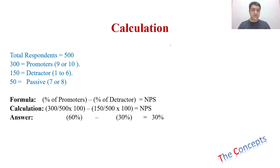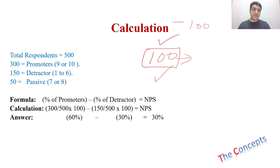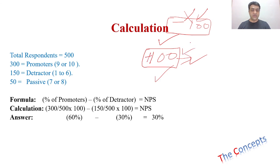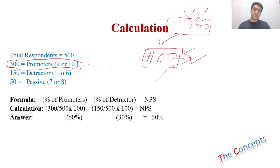Ideally all organizations should have a score of 100, meaning every customer recommends the product to others. But it can also be minus 100, meaning all customers are detracting potential buyers. A score of plus 100 is an excellent indicator of business growth. Every company's dream is to reach a level where 100 percent of customers are delighted customers. That is all about this topic — thank you very much.